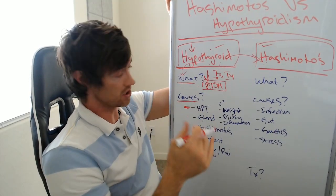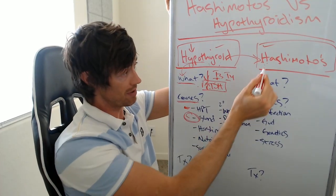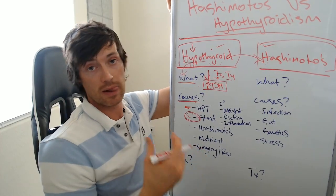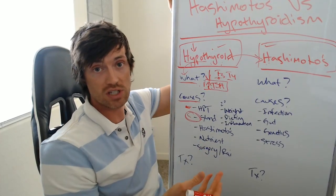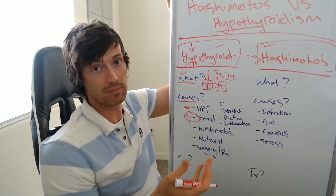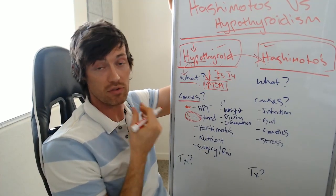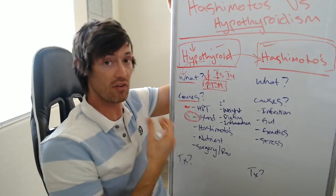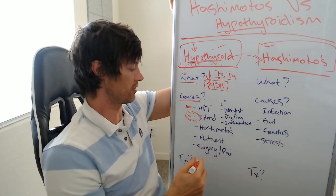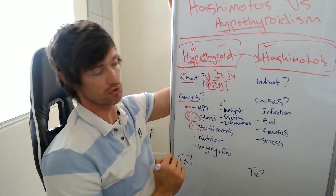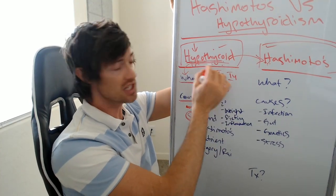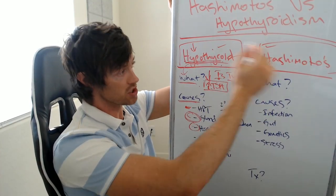Problems in your brain can cause low thyroid. Problems in the thyroid gland itself, like with Hashimoto's, can cause it as well. If you damage the gland — say, through some sort of trauma directly to the gland — it's not going to be able to work, and therefore you won't have enough thyroid hormone. Hashimoto's thyroiditis is another cause of hypothyroidism, but remember, not every case of hypothyroidism is the result of Hashimoto's.